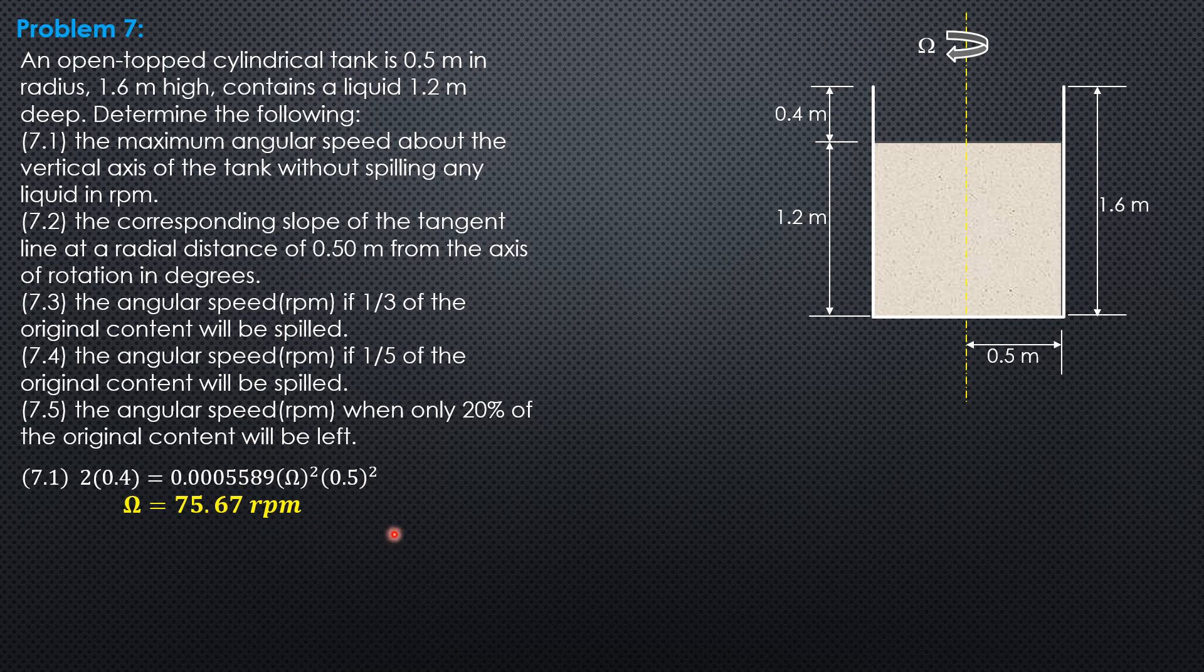For the second question, the corresponding slope. So tangent of theta slope is omega square x over g. That's the general formula where x here is 0.5 and omega must be in radians per second rather. So since we have found omega in part 1, we just multiply this by pi over 30 to automatically convert that to radians per second.